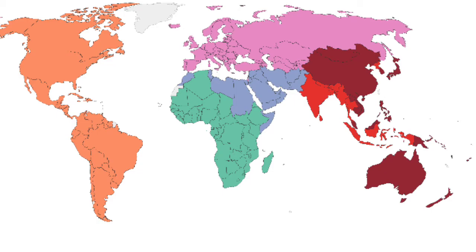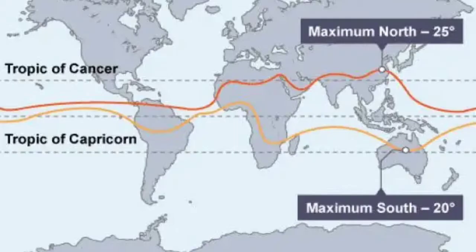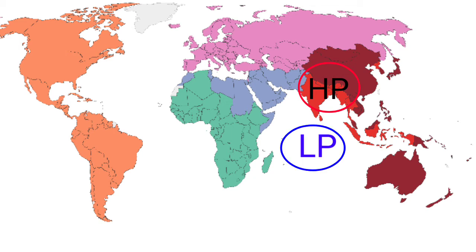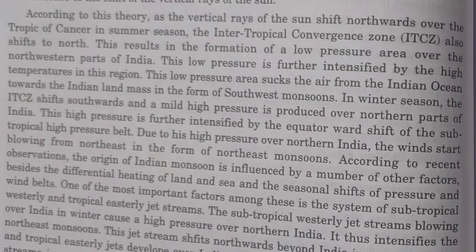During the winter season, the ITCZ shifts towards the south because of the apparent movement of the sun — the sun shines vertically over the Tropic of Capricorn in winter, so the ITCZ also shifts towards the Tropic of Capricorn. This replaces the low pressure with a high pressure system, while the neighboring water bodies are in low pressure. The winds then start blowing from the Indian landmass towards the equator and the Indian Ocean, causing the seasonal reversal of wind — the monsoon.